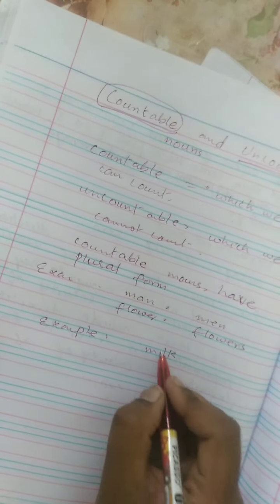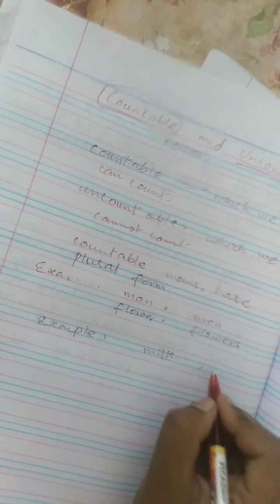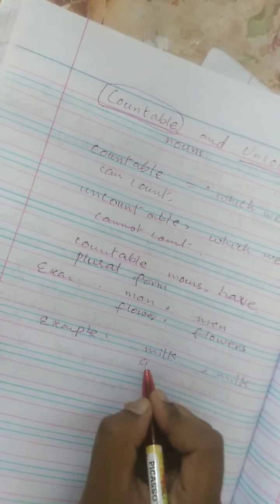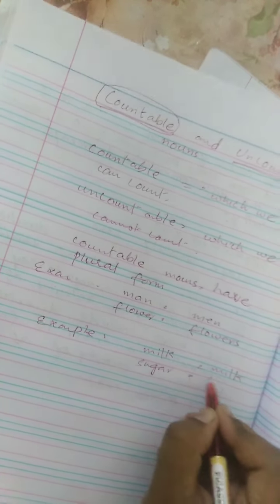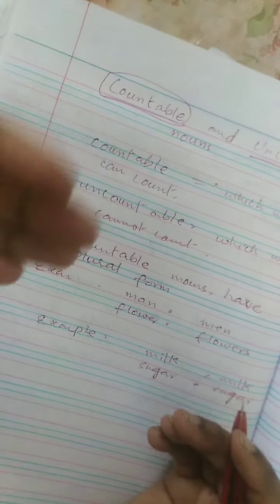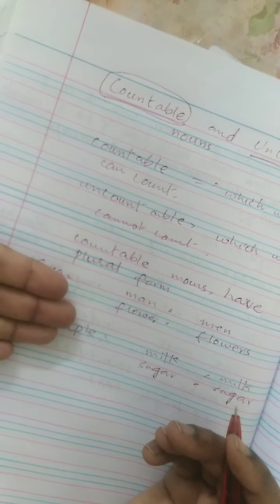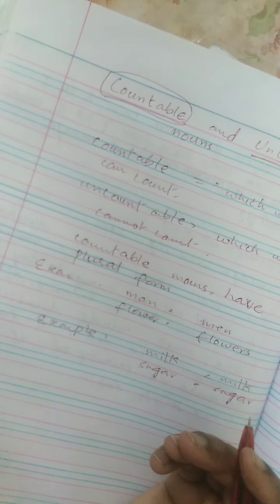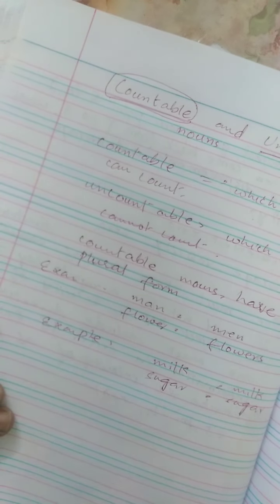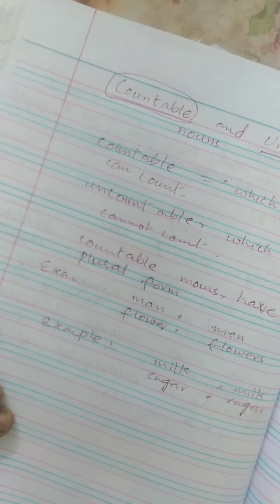Kaisi likhenge? Milk hi likhenge, milks hum nahin likh saktay. Sugar ko hum sugar hi likhenge, sugars nahin likh saktay. So countable nouns have plural forms but uncountable nouns don't have plural forms.